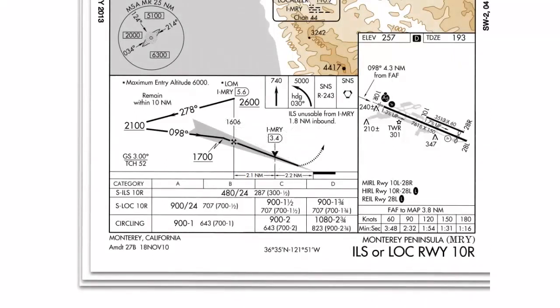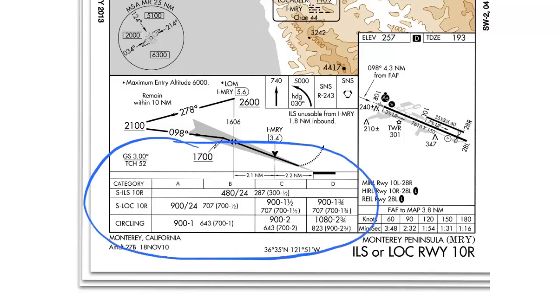Hi everyone. In this lesson, we're going to discuss the minima section of an instrument approach chart. The minima section consists of three separate areas.